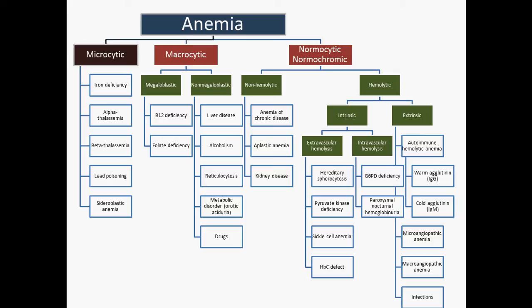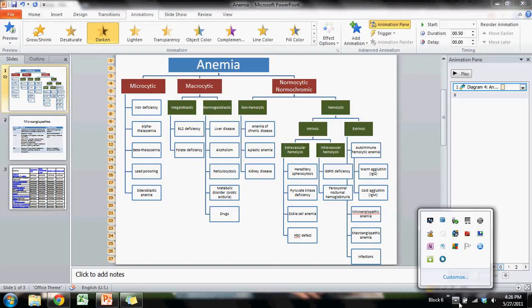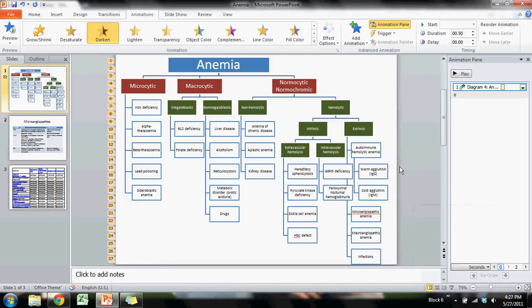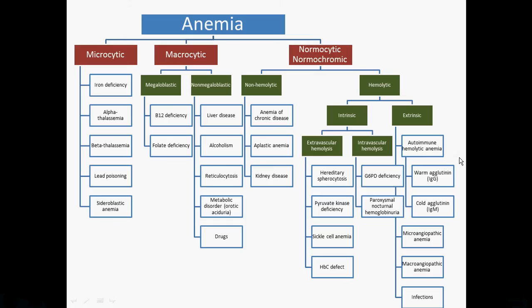Let's start with microcytic anemia. Why would you have a small red blood cell? Well, usually it involves problems making new red blood cells — a lot of these different anemias have to do with dysfunctional production of red blood cells. The first one is iron deficiency anemia, caused by a lack of iron, which could be for many reasons — whether you're not getting enough iron in, or you're losing a lot due to chronic bleeding.